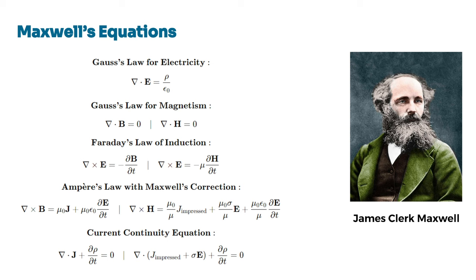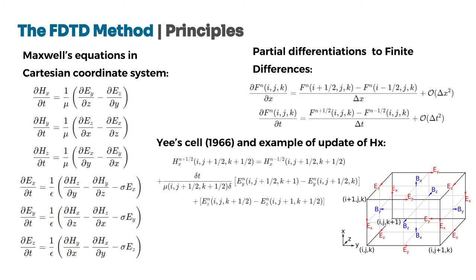We have also included the current continuity equation. Over time, as technology advanced, researchers sought methods to simulate and predict electromagnetic behavior, especially in complex systems where analytical solutions were not feasible. One of the most powerful tools developed for this purpose is the Finite Difference Time Domain method. The FDTD method, first introduced by Kane Yee in 1966, became a groundbreaking computational approach because it solved Maxwell's equations numerically without any physical approximations.